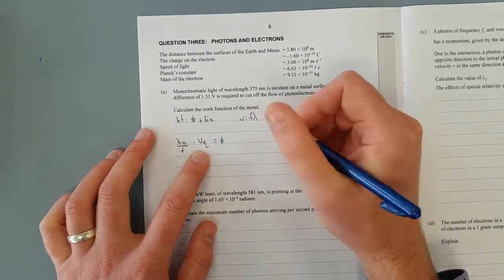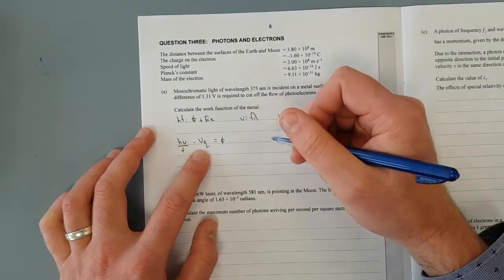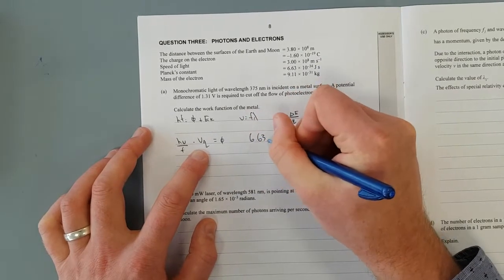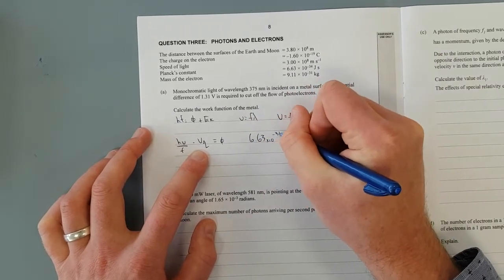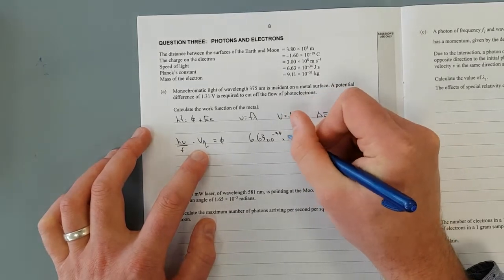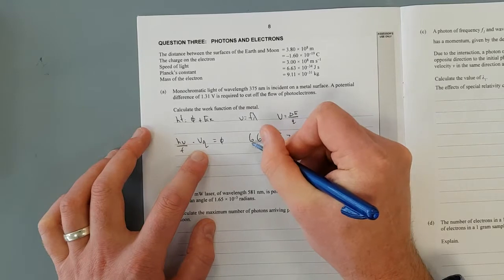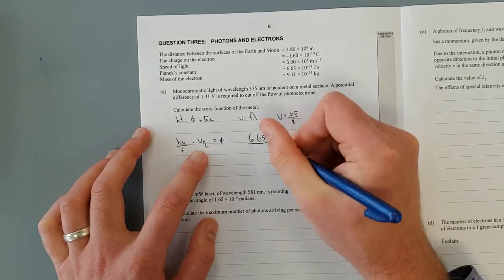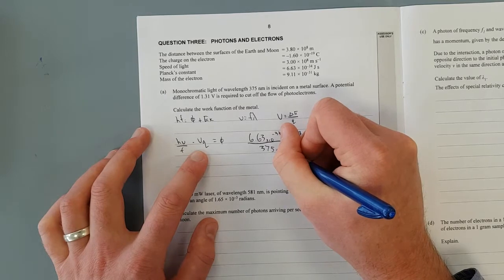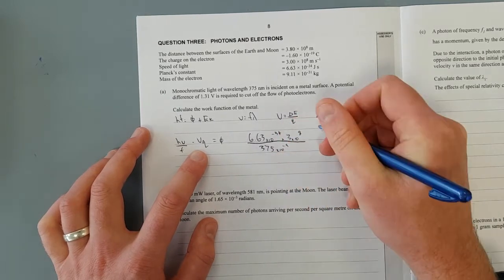I'll put the numbers in. 6.63 times 10 to the negative 34, that is Planck's constant, not divided by pi, times 3 times 10 to the 8, over 375 nanometers. I'll just put times 10 to the negative 9, because that's nanometers.